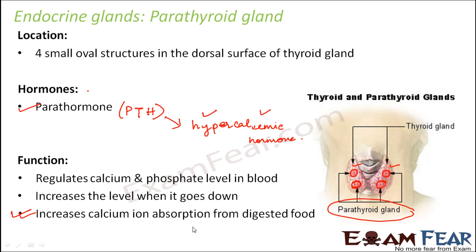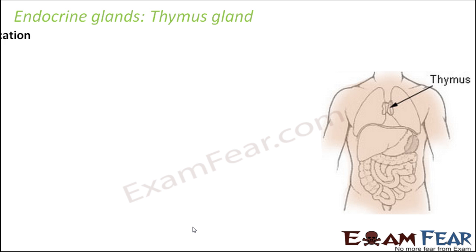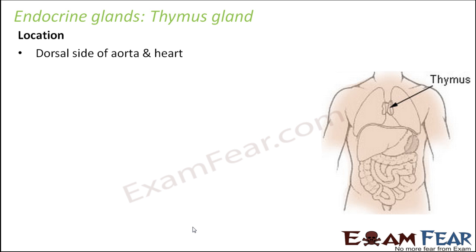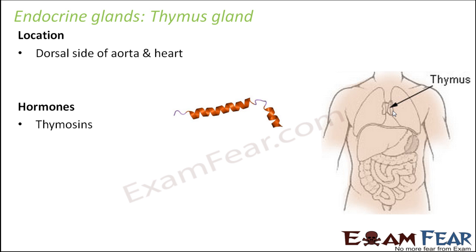The next gland is the thymus gland, located on the dorsal side of the aorta and heart. Towards the back surface of the heart is present the thymus gland. The hormone created by the thymus gland is thymosine.